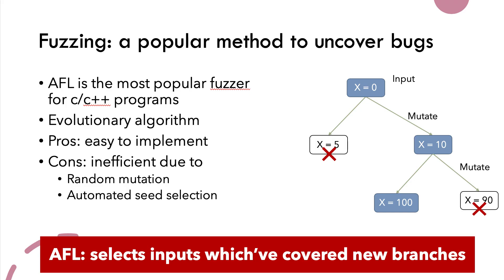You can see the mutation process on the right of the slide. The red cross indicates test cases that are not selected to mutate. A fuzzer is easy to implement; however, it is inefficient due to random mutation and an inefficient objective function. The criteria to keep or discard an input for the next generation of mutation is the objective function of the fuzzer.